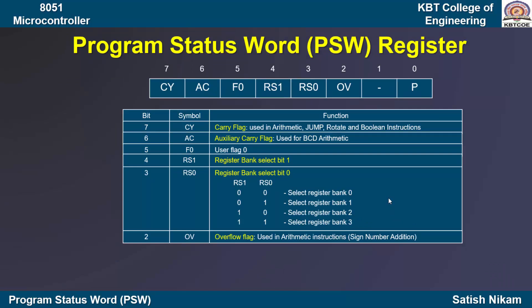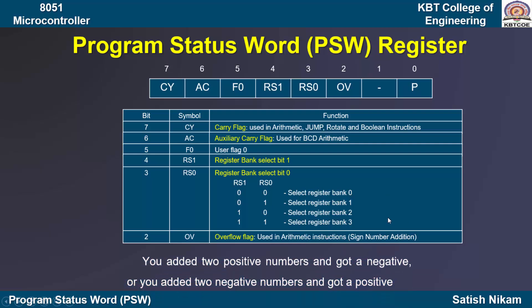The second bit from the PSW register is the overflow flag, which is used in signed number addition. For example, if we perform the addition of two positive numbers and get a negative result, or if we perform the addition of two negative numbers and get a positive result, then the overflow flag helps identify that particular problem.